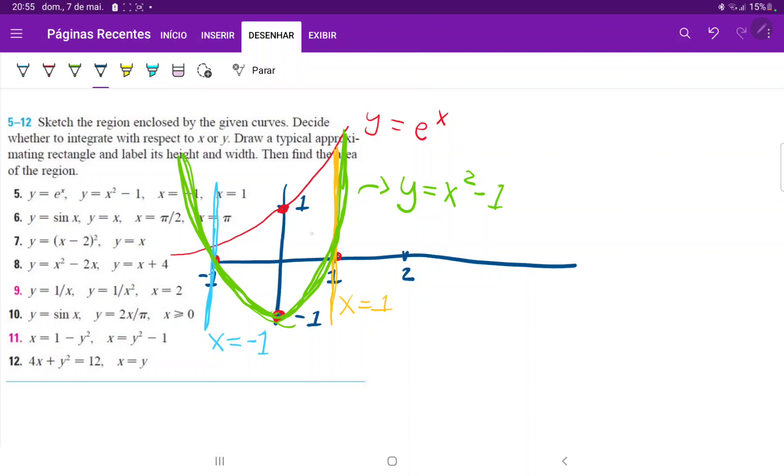This is our representative rectangle of the area where the height equals e to the x minus (x squared minus one), and the width is dx, which is a piece of our x axis.